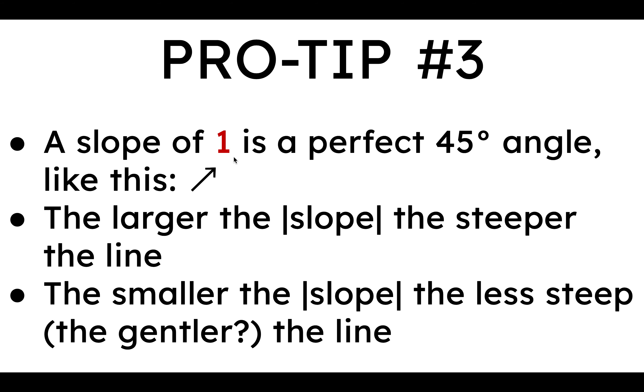And on the other side, the smaller the slope, as you go below 1 and towards 0, so like 1 half or 1 third, like in our equation, or 1 millionth, the slope is going to get more and more gentle, less steep. I used a thesaurus to find the opposite of steep, to find an antonym, and gentler was the only one that seemed to make any sense at all.